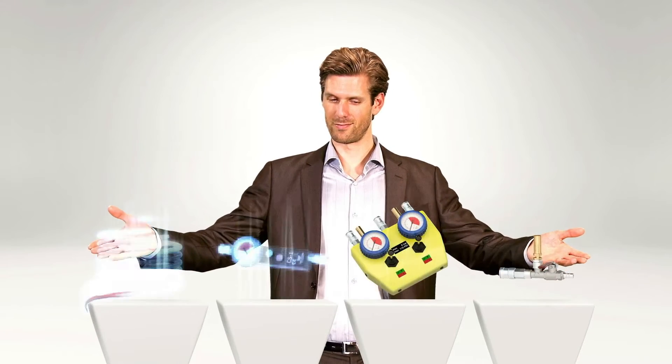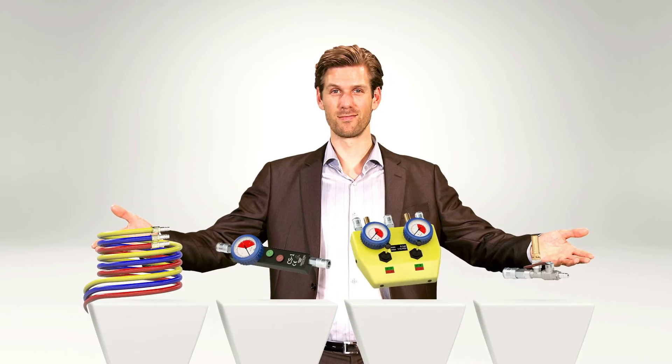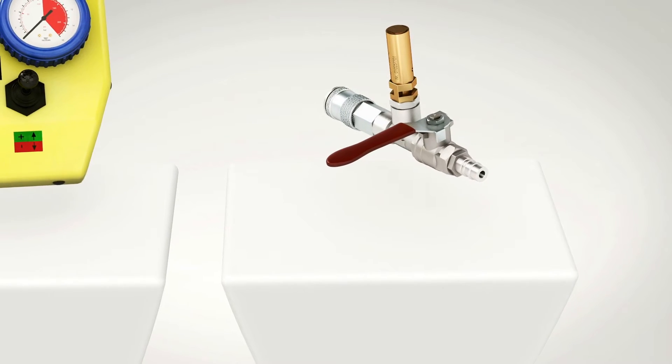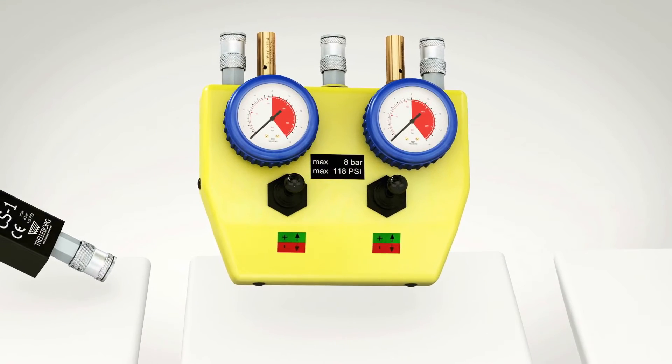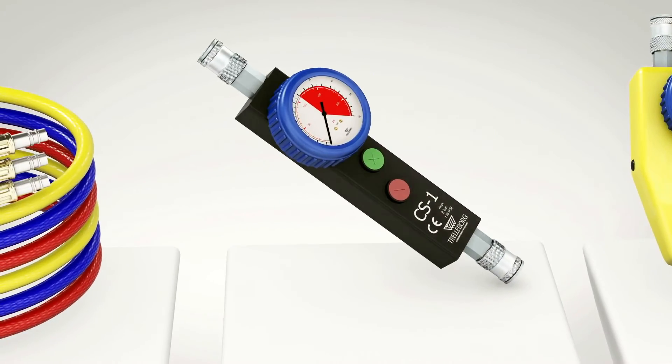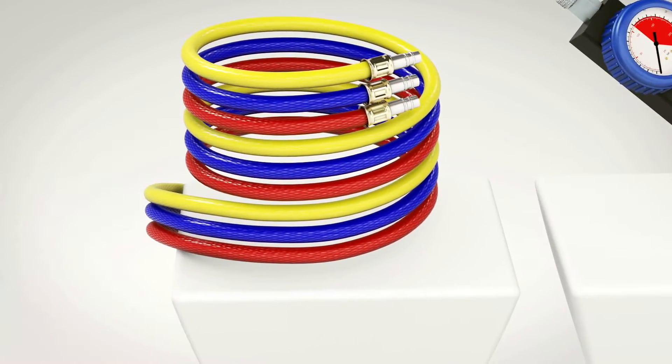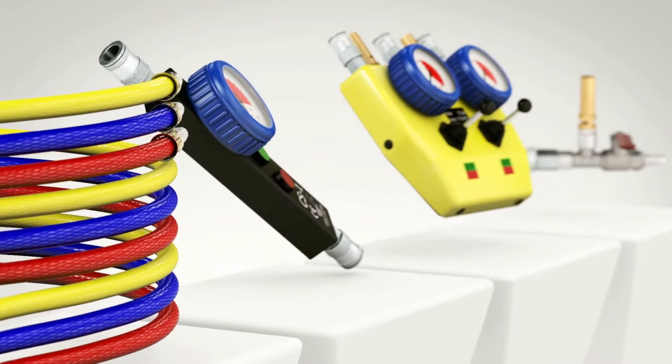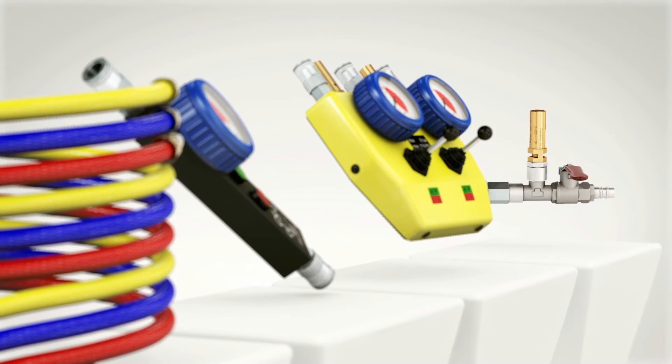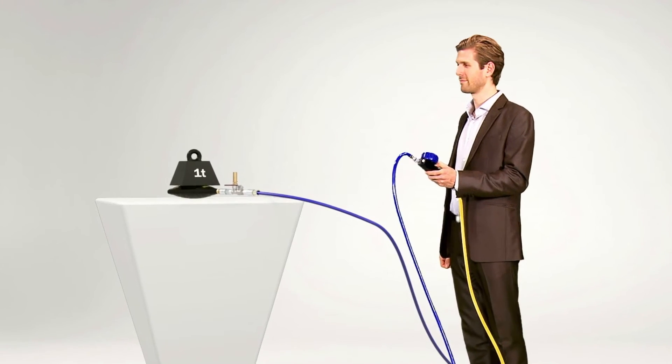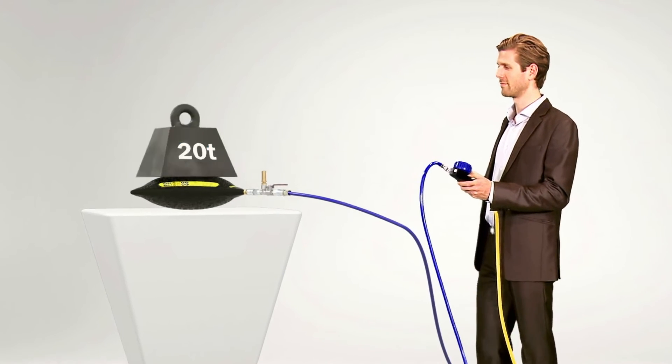To operate a Trelleborg lifting bag, some of our accessories will come in handy, like shut-off valve, twin control box, single control box, and air hoses in red, blue, and yellow. And with that equipment supplied by Trelleborg, you've everything you need to lift anything you want.